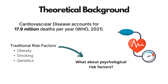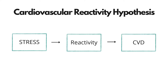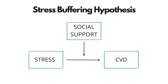Extensive research exists on traditional risk factors such as smoking, obesity, and genetics. However, it is crucial to also consider the psychosocial factors that are important determinants of cardiovascular disease. Stress has been noted as a particularly important risk factor. The cardiovascular reactivity hypothesis suggests that intense cardiovascular reactivity to psychological stress contributes to the development of cardiovascular disease. Yet not everyone who deals with stress develops cardiovascular disease, and one key difference is perceived social support.